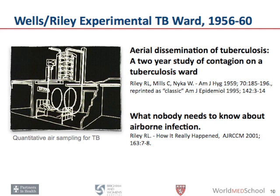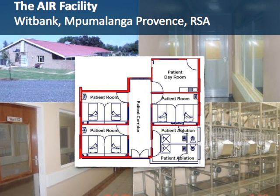In the late 50s and early 60s, Richard Riley developed a remarkable model for studying TB transmission, whereby patients were hospitalized and the air from the hospital rooms was conducted to the penthouse of the hospital, where hundreds of guinea pigs were housed. Guinea pigs are highly susceptible to tuberculosis, making this a quantitative air sampling facility for tuberculosis. We've recreated a similar facility in Mpumalanga Province, Republic of South Africa, also with six patient beds and adjacent guinea pig exposure facilities.